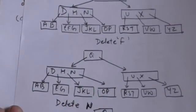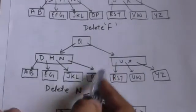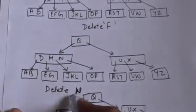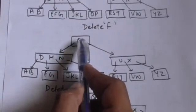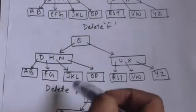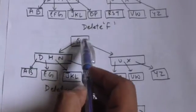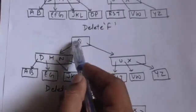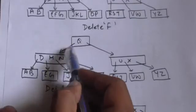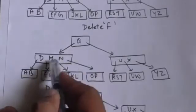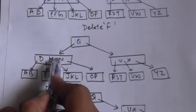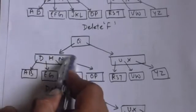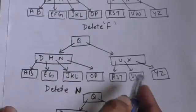Now we have to delete key N from this B-tree. Starting from the root, key N is smaller than Q, so we move to the child at the left of key Q. This child node has three keys, so we can move to it. We reach this node, which contains key N — it is an internal node. Now we have to delete key N from this node.